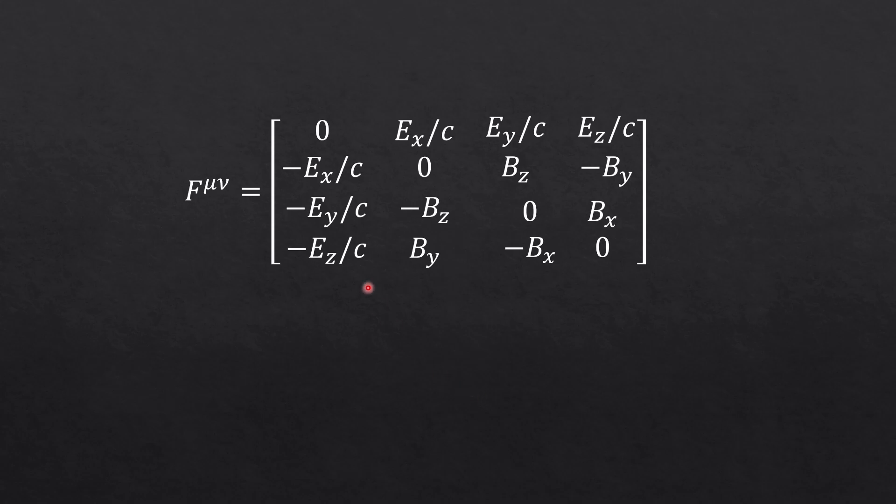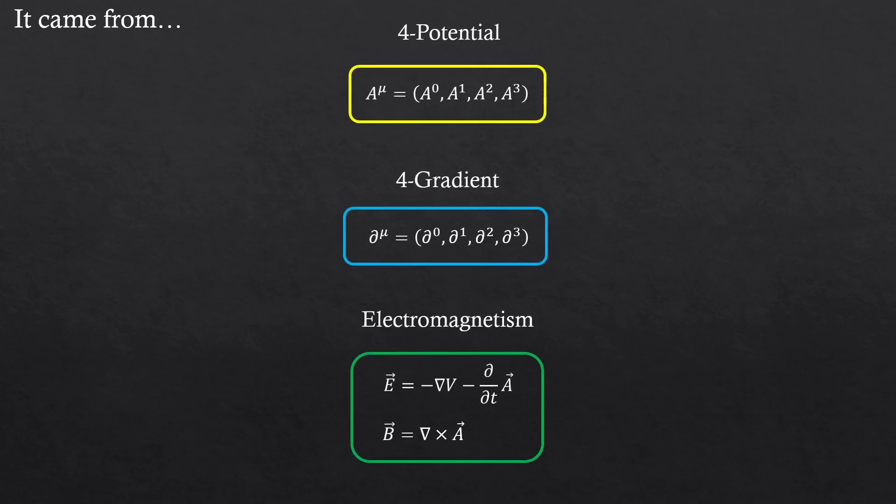Okay, so that's why we have created a 4x4 matrix to do some 4D algebra. But again, where did this come from? It came from these three things: 4-potential, 4-gradient, and definitions of electric and magnetic fields from electromagnetism.